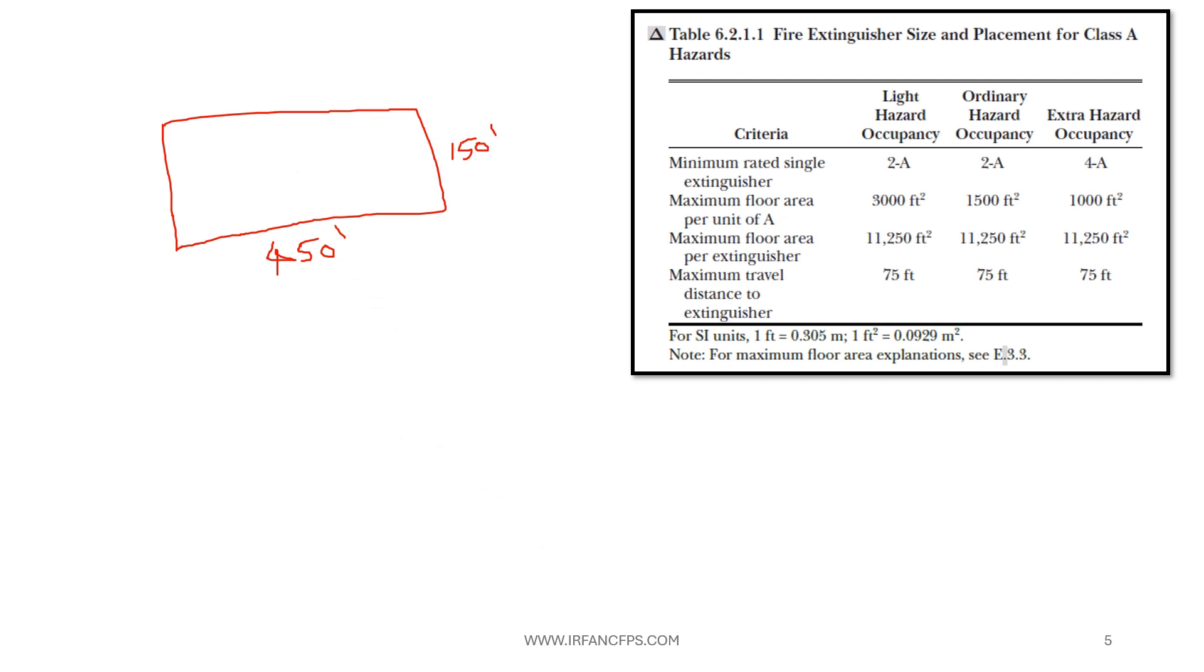So as per the table, the maximum floor area per extinguisher for any hazard will be 11,250 square feet. So our building area we need to calculate. So our building area will be 450 feet multiplied by 150 feet which will be equivalent to or which is equal to 67,500 square feet. So now we got the total area for our building.